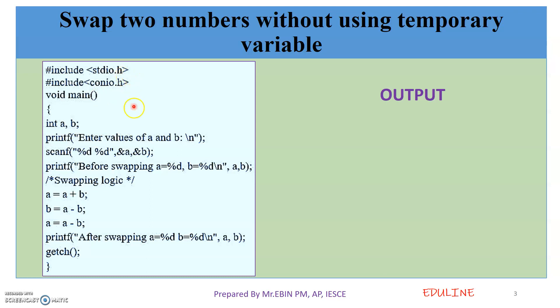Normally, we will have header files: stdio, then the main function with opening braces. That's where we do variable declaration. Here, we have two variables, A and B.